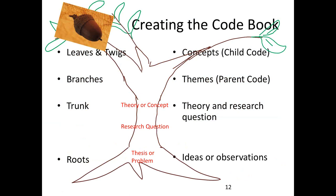Another way to look at creating a codebook is like a tree, where the roots present as the ideas or observations that bring us into research. The research questions and the theoretical or conceptual framework are the trunk of the tree. Then the different theories or themes provide the branches, or parent codes, and on into child codes or secondary codes. Some students like to see pictures, so whatever works to help folks understand that there is a process and a flow to this coding business.